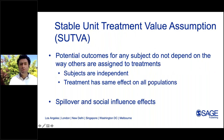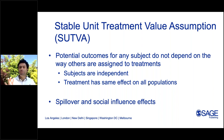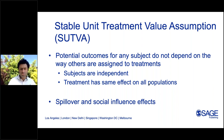The other assumption is called the Stable Unit Treatment Value Assumption (SUTVA) — nothing more than assuming that the potential outcome of one subject does not depend on the other people assigned to the treatment group. The effect that a particular treatment has is independent from the effect on other people and how others are assigned to treatment. This assumption can sometimes be challenged in social science experiments.